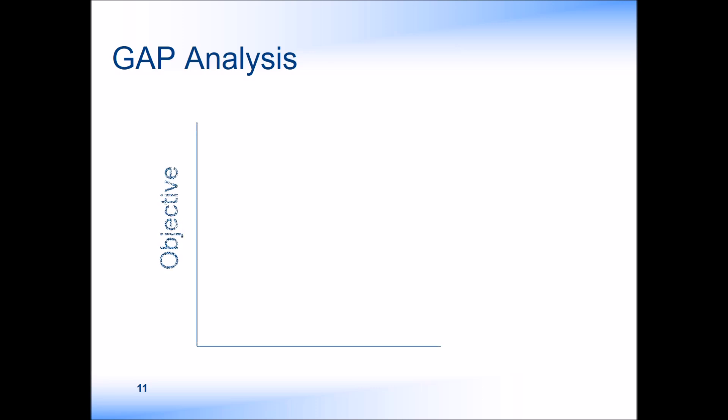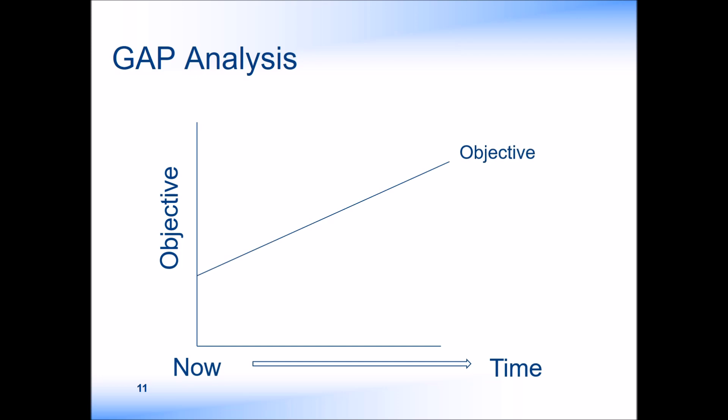Gap analysis fits into the strategic management process when reviewing how well the current strategy is working. We can create a graph of our objective over a period of time, which is usually in years as this is strategic. The objective could be a profit target, or perhaps the number of staff required to be recruited over the next five years to meet demand, or in fact anything that is quantifiable. Then, given our current strategy, we can forecast where we will get to if we continue with it. In this case, we have a gap.